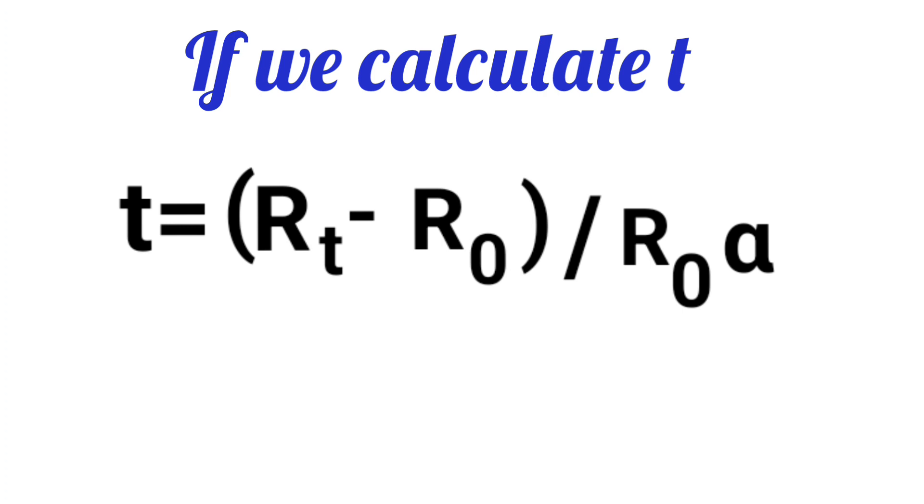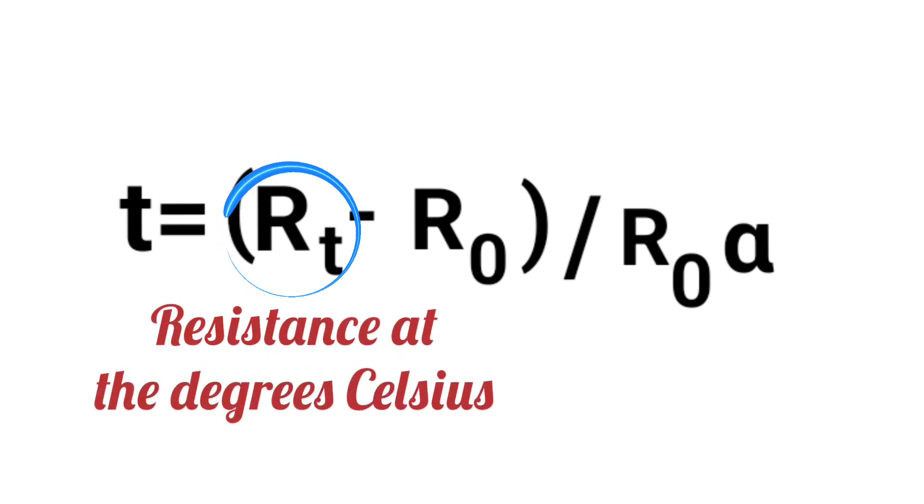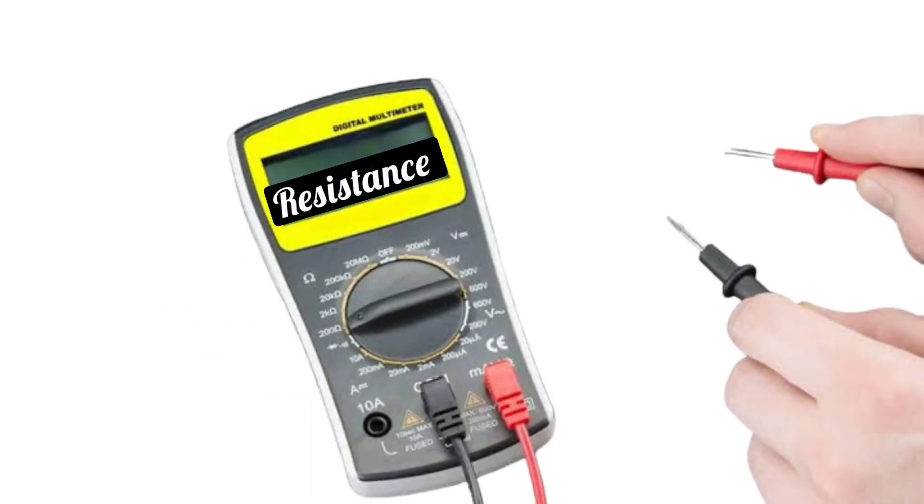Here you will see three parameters: R_t, R_0, and alpha. You need to calculate t. R_t is the resistance at t degrees Celsius. Or understand it in this way, the resistance measured with a multimeter is R_t.